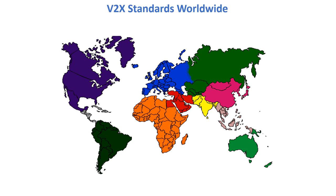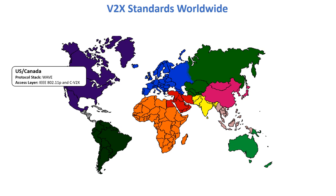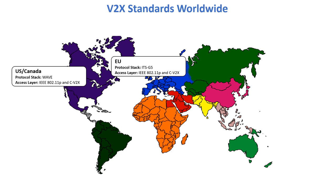There is currently no global V2X communication standard — each region has its own variant. In the US, the access layer options are IEEE 802.11p-based DSRC and 3GPP-based Cellular V2X, while the protocol stack is called WAVE. In the EU, the access layer is the same as the US but the protocol stack is called ITS-G5 — note that G5 is not the same as 5G.